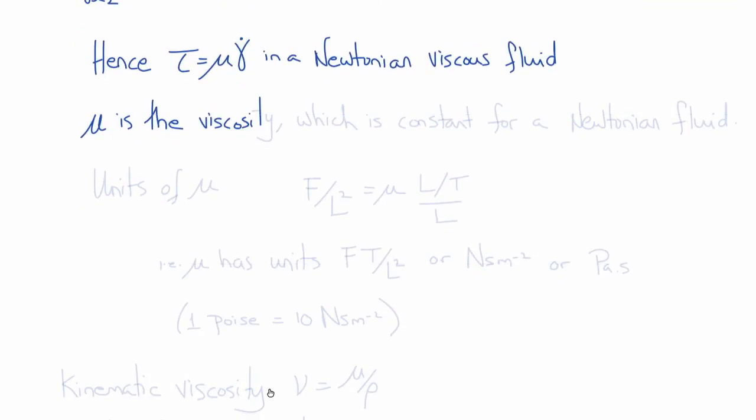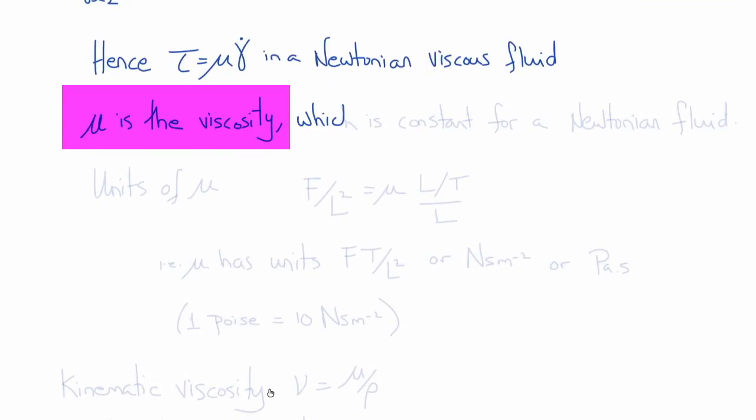So mu is called the viscosity, and for a Newtonian viscous fluid, the viscosity is constant.